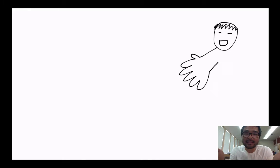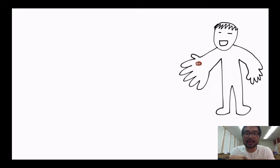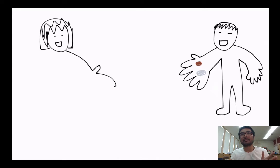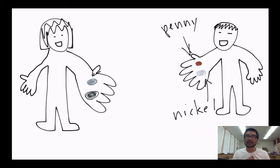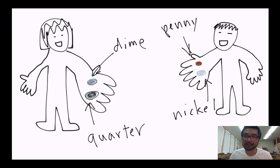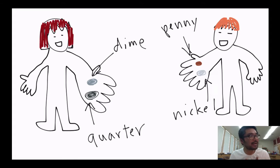I have a question for you. If your dad has a penny and a nickel, and if your mom has a dime and a quarter, and each of your parents is going to give you one coin, what is the possibility of money that you can get?